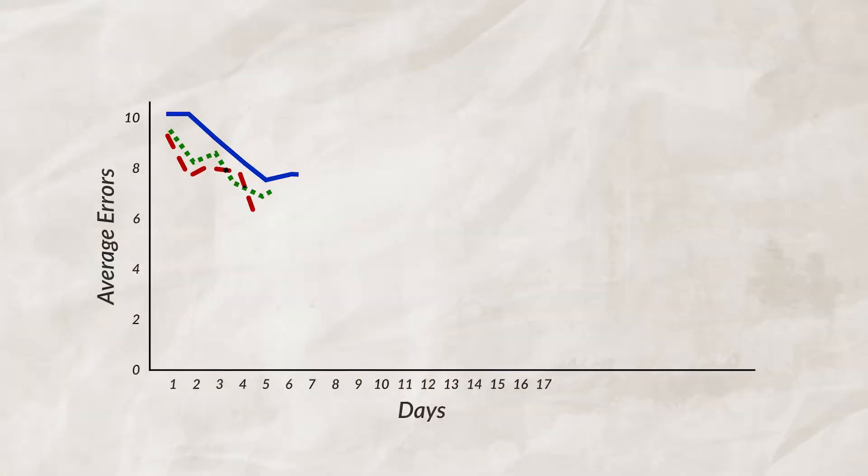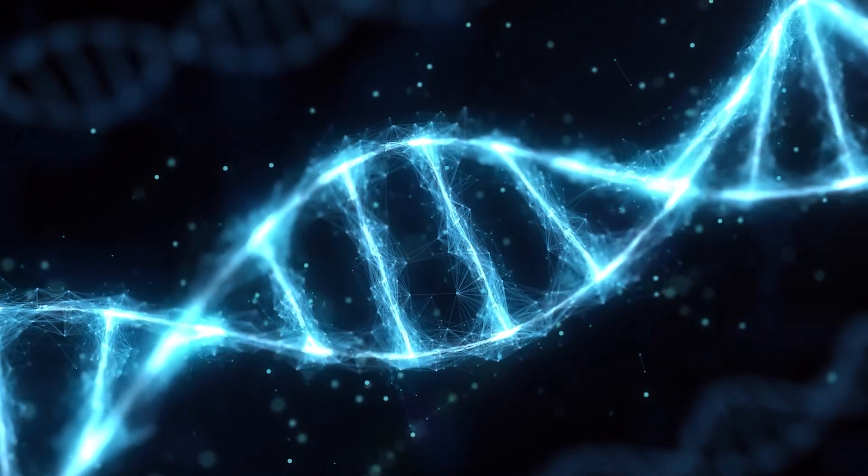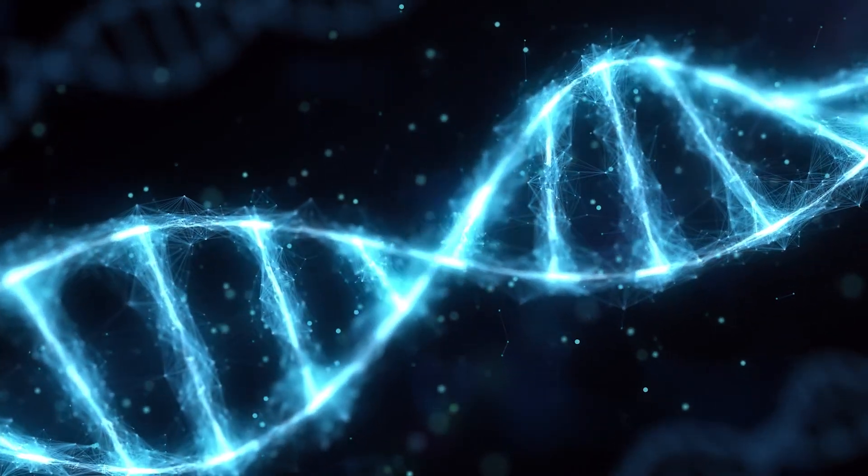When food was provided as a reward at the end of the maze, the rats had more motivation to quickly finish it, showing extrinsic motivation — when an individual is motivated to perform a behavior because of an external reward or to avoid external punishment. Intrinsic motivation is when an individual has a desire to do something for their own sake, with no external punishment or reward. Biological influences such as an individual's natural predisposition can also restrict which stimuli and responses can be associated together in classical conditioning — if a behavior is too unnatural for an animal, they may not be able to learn it.